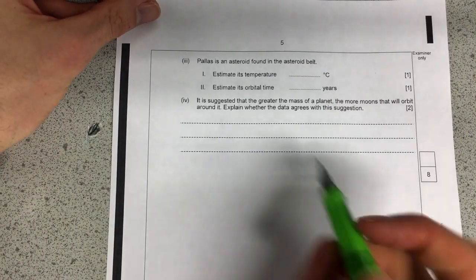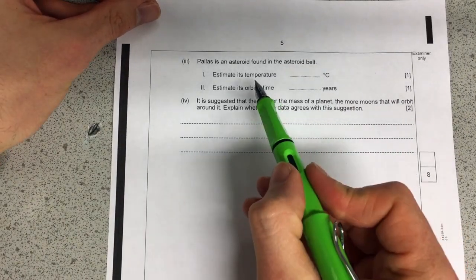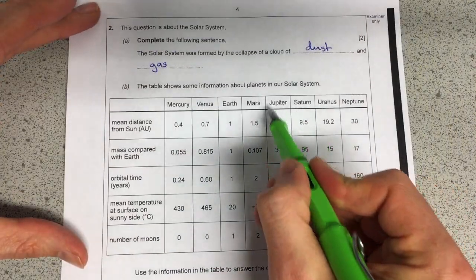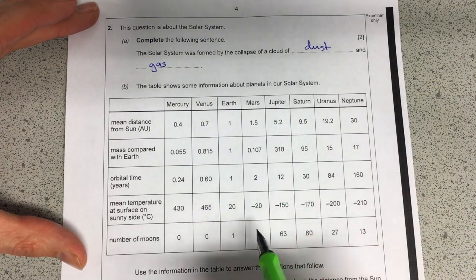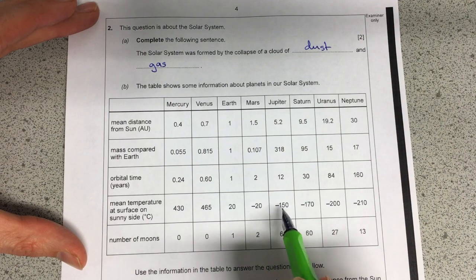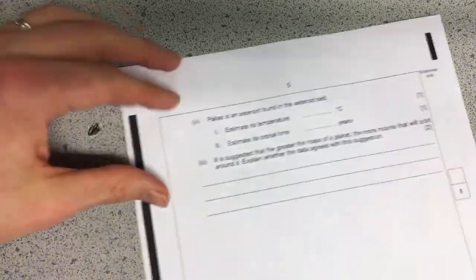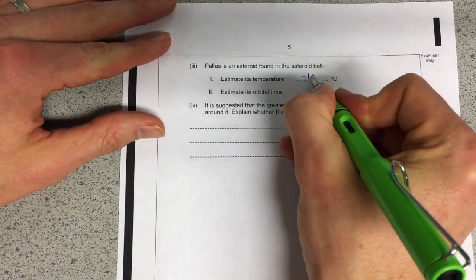Flip over for the rest. The next bit here is about an asteroid in the asteroid belt and we're asked to estimate its temperature. So what you need to remember is that there is an asteroid belt between Mars and Jupiter. So anything between minus 20 and minus 150. So I'm going to choose minus 100.